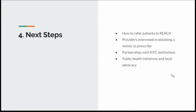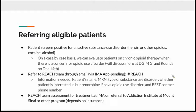To refer patients to REACH, use our hashtag email: type 'hashtag REACH' in Epic and email us basic information—patient name, medical record number, substance being used, whether they're interested in buprenorphine if opioid use disorder is present, and most importantly their best contact information. We will triage referred patients and decide whether they can be treated at IMA's REACH program or whether they need to be sent to the Addiction Institute or elsewhere.